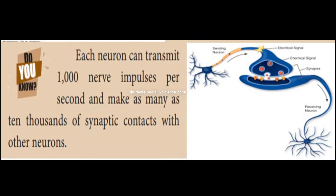Each neuron can transmit. Neurons are stimulated in the brain when the pain comes to the stimulus. We have to give information about the pain. What we call the pain is that we have to use the heat. That is a neuron.